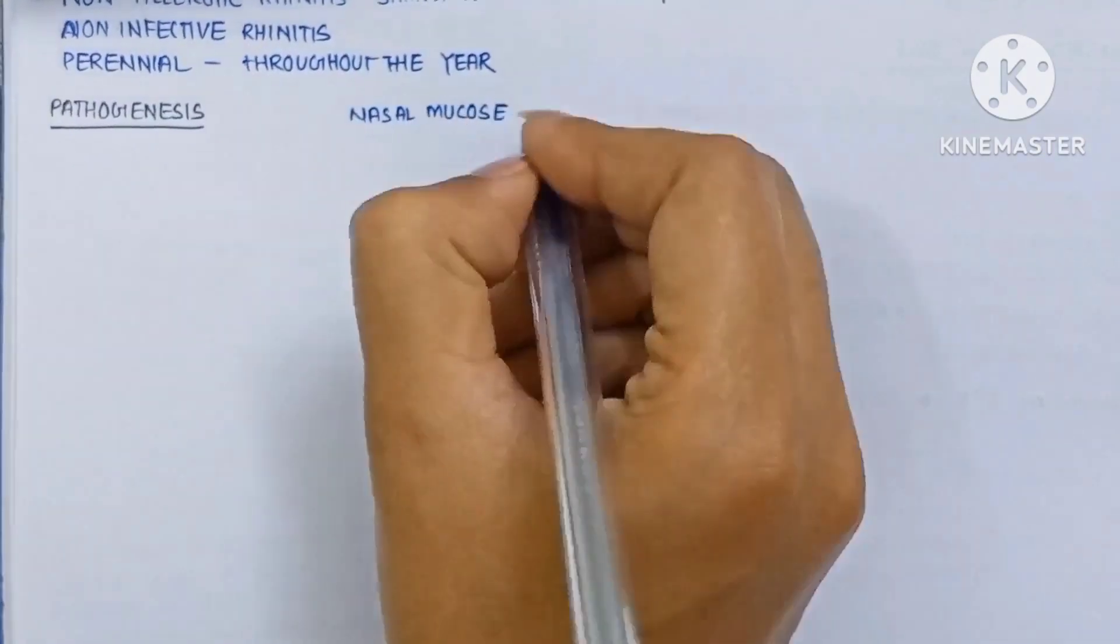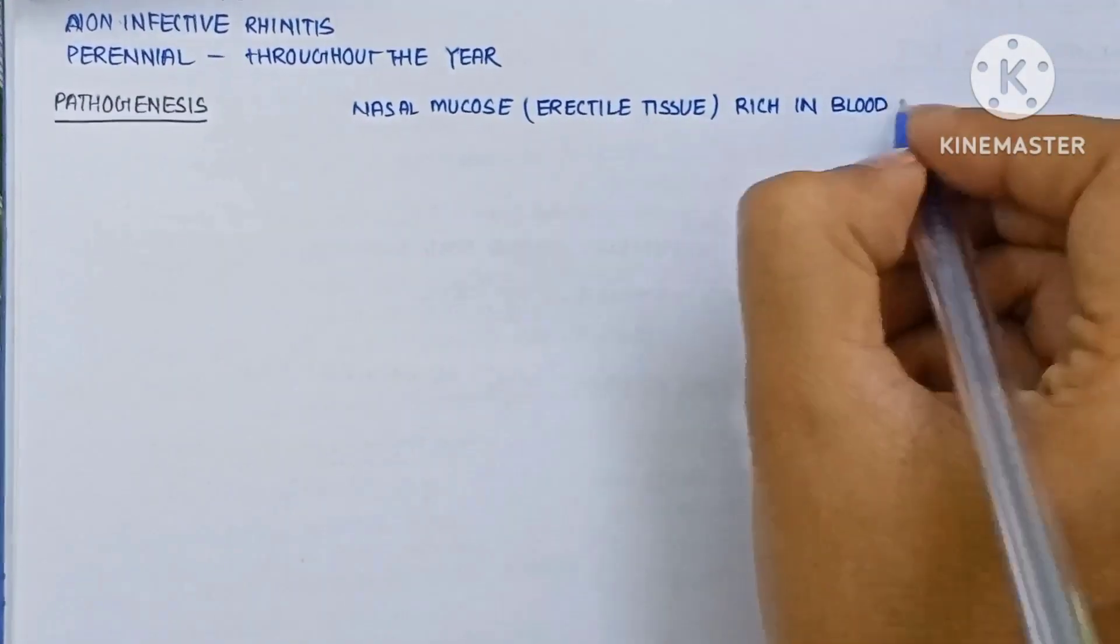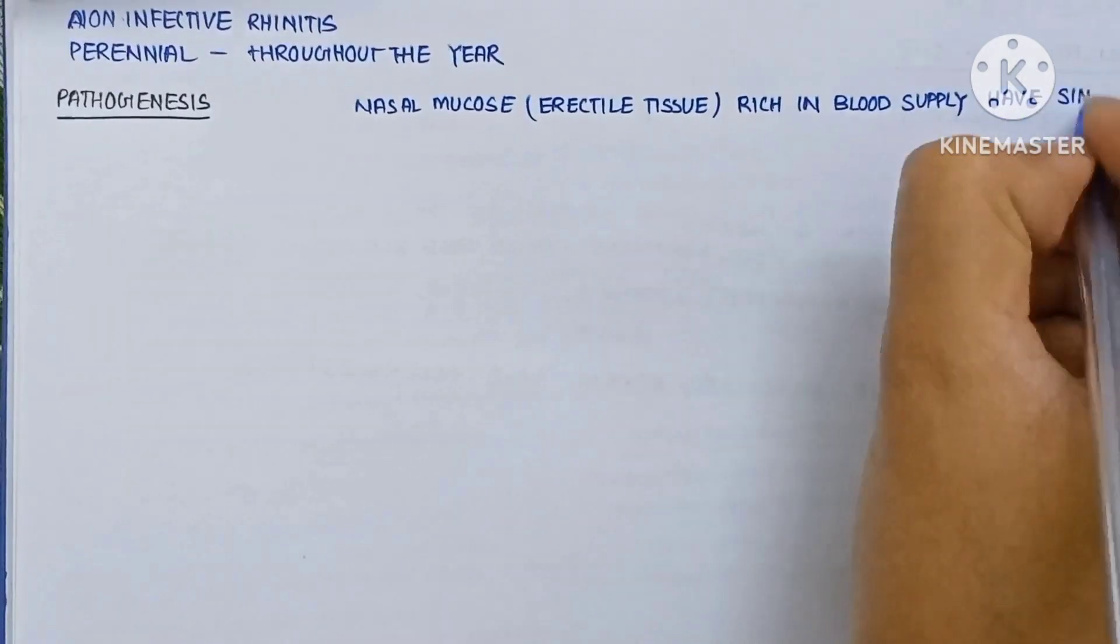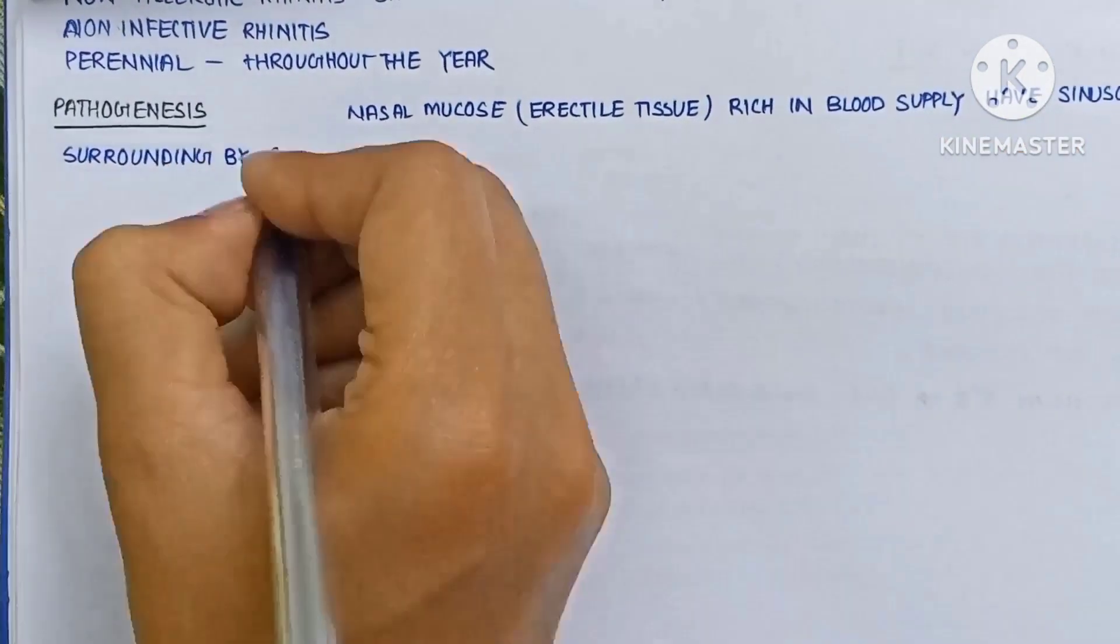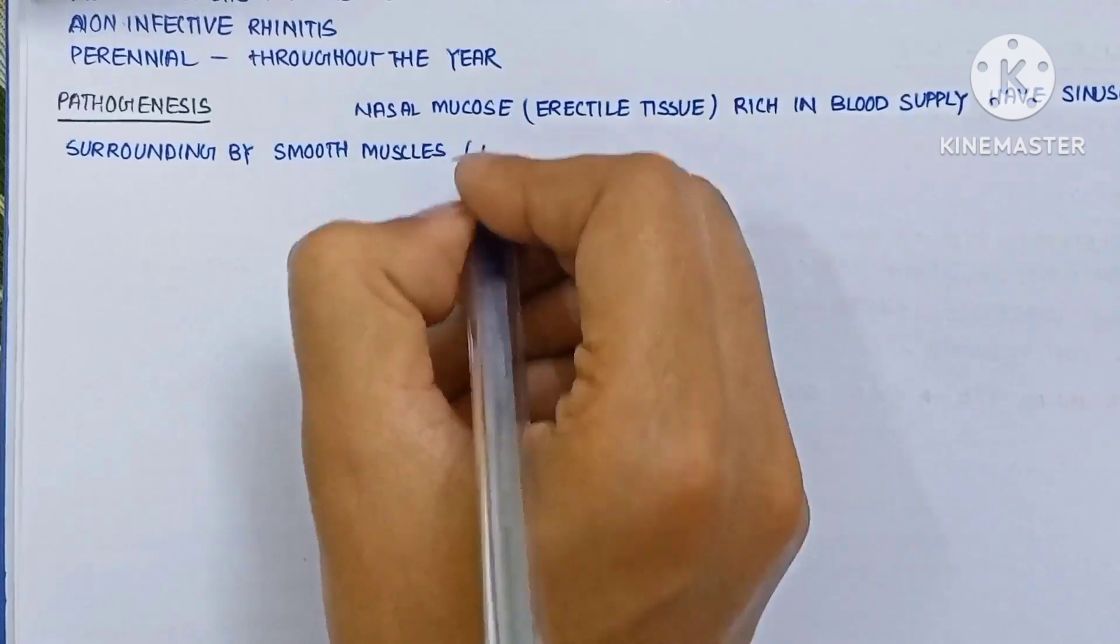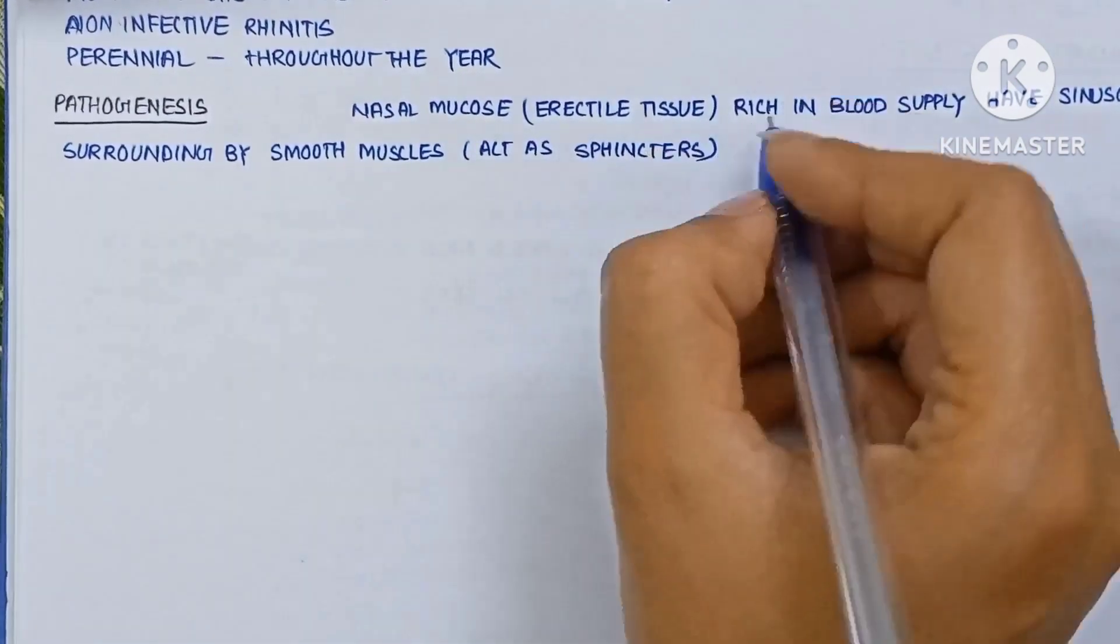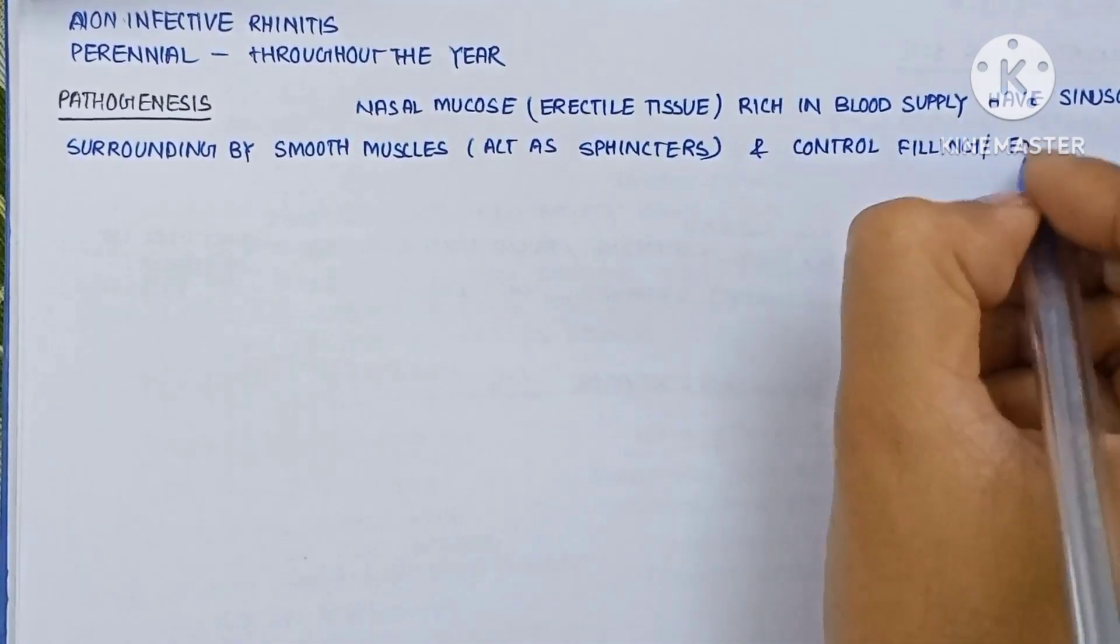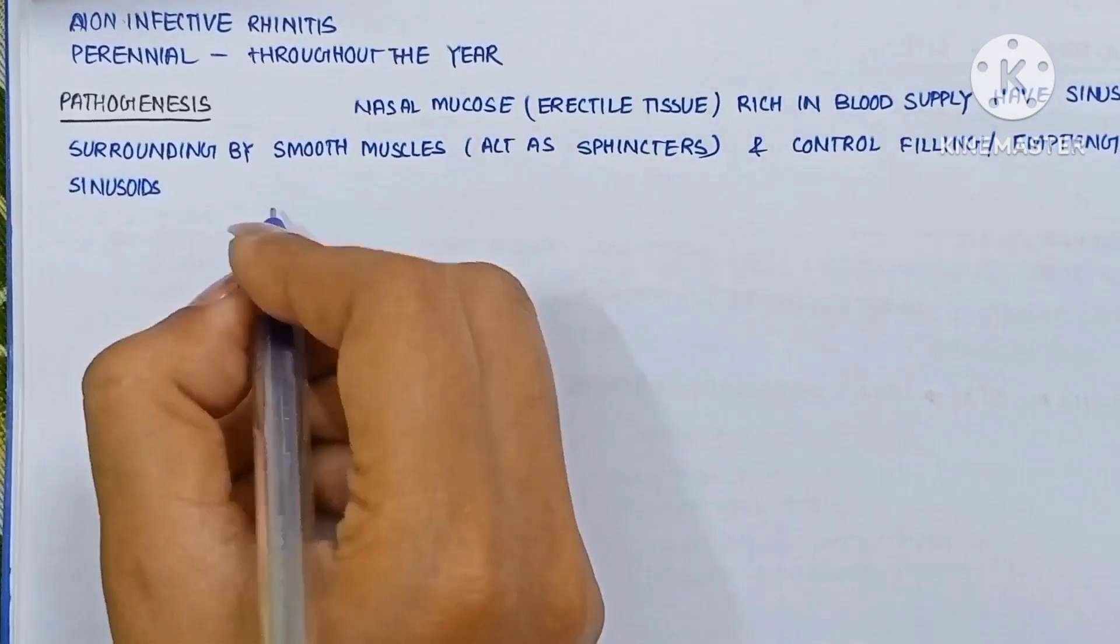Now the pathogenesis of vasomotor rhinitis. The nasal mucosa is erectile tissue. In the blood supply there are sinusoids which are surrounded by smooth muscles that act as sphincters and control the filling or emptying of the sinusoids.